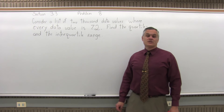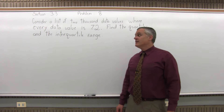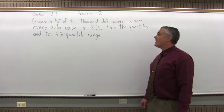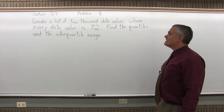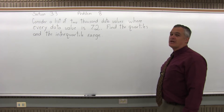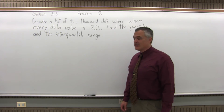This is Section 3.3, Problem 8. It says: consider a list of 2,000 data values where every data value is 7.2. Find the quartiles and the interquartile range.